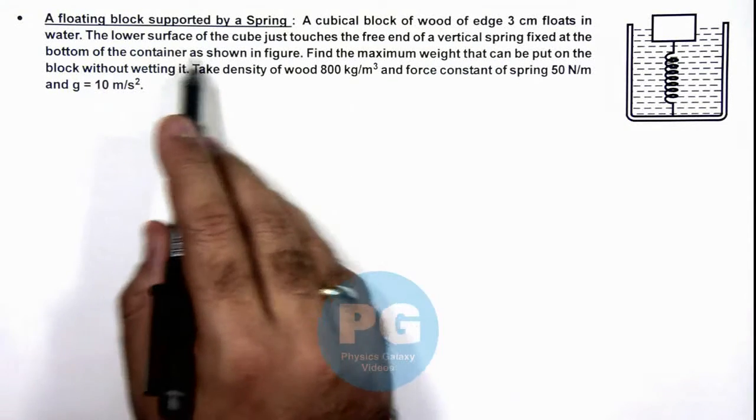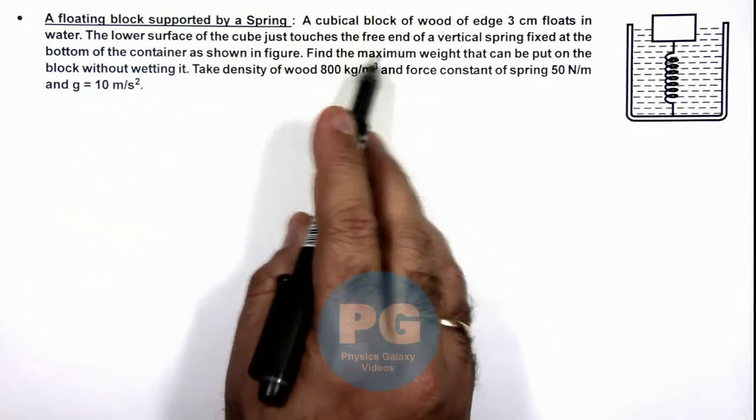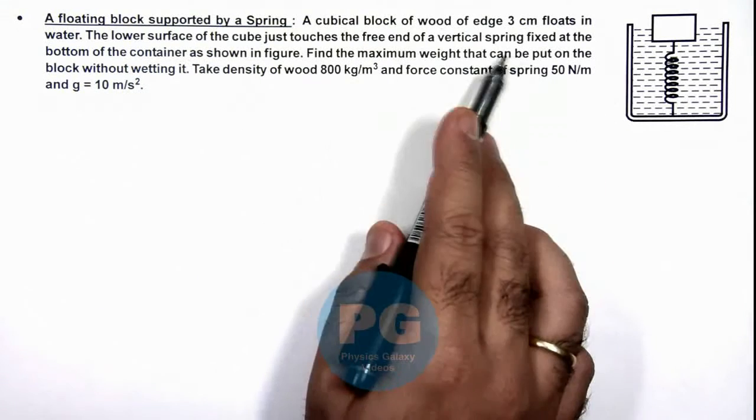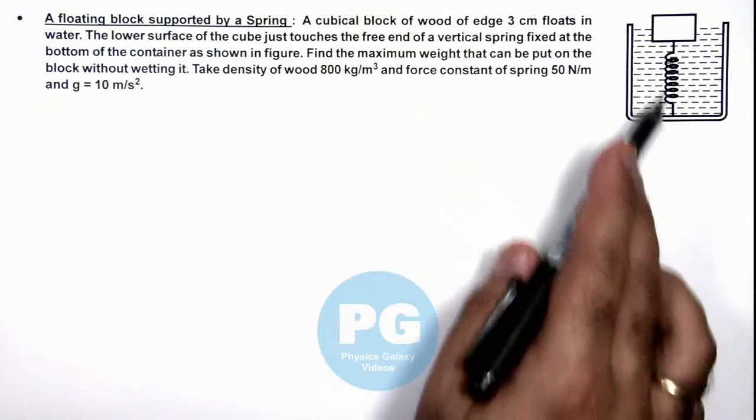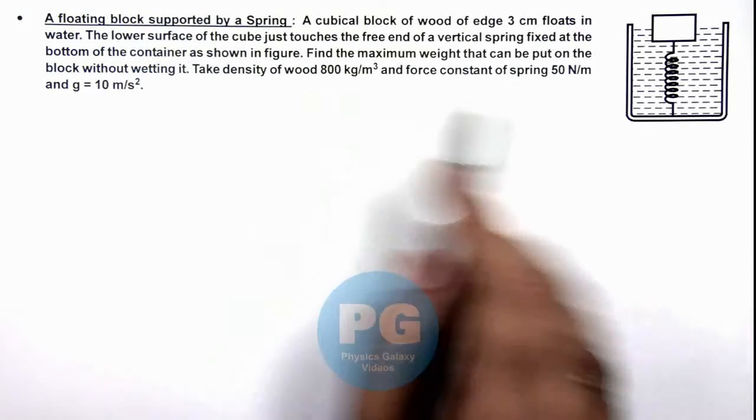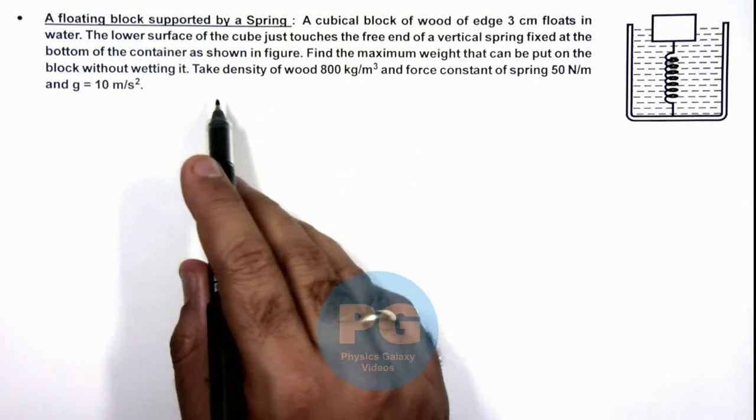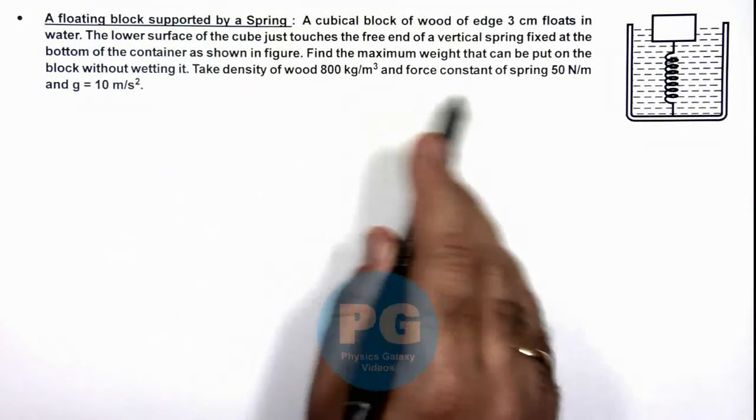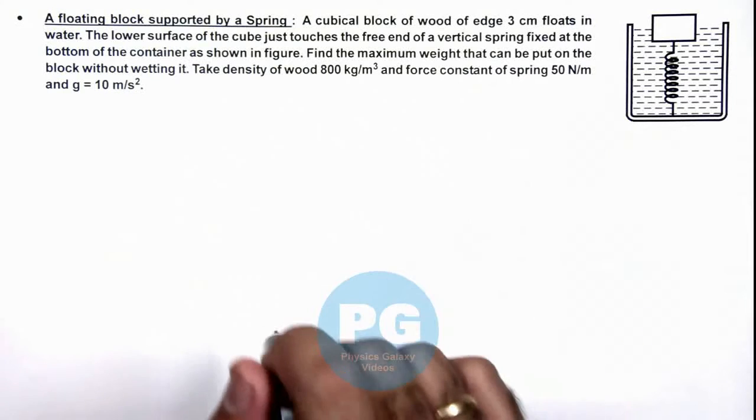The lower surface of the cube just touches the free end of a vertical spring fixed at the bottom of container as shown. We are required to find the maximum weight that can be put on the block without wetting it. The density of wood is given to us and force constant of spring is also given.